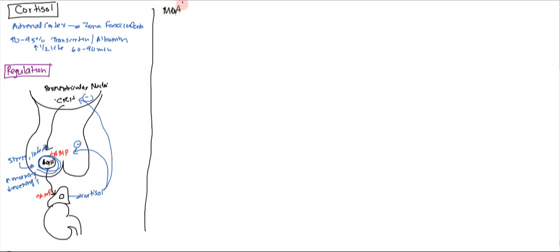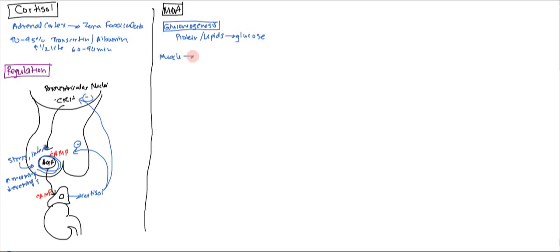Now let's shift focus to the mechanism of action. Cortisol is a glucocorticoid, so all it wants to do is gluconeogenesis — it wants to make glucose — and it will do anything to make that happen. It's going to convert all your protein and your lipids into glucose. Where does it get the protein from? From muscle and other parts of the body. It takes out amino acids and gives them to the liver so that the liver can turn them into glucose.